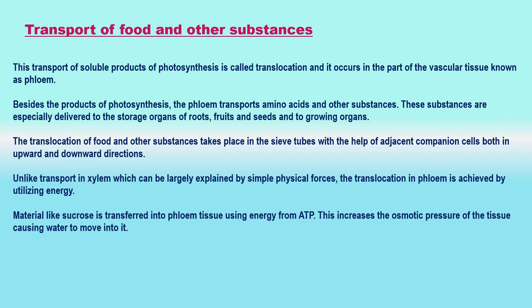Besides the products of photosynthesis, the phloem transports amino acids and other substances. These substances are especially delivered to the storage organs of roots, fruits, and seeds, and to growing organs. The translocation of food and other substances takes place in the sieve tubes with the help of adjacent companion cells, both in upward and downward directions. Unlike transport in xylem, which can be largely explained by simple physical forces, the translocation in phloem is achieved by utilizing energy. Material like sucrose is transferred into phloem tissue using energy from ATP, which increases the osmotic pressure of the tissue causing water to move into it, and this pressure moves the material to tissues which have less pressure, allowing phloem to move material according to the plant's needs.